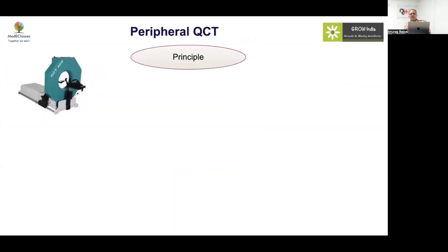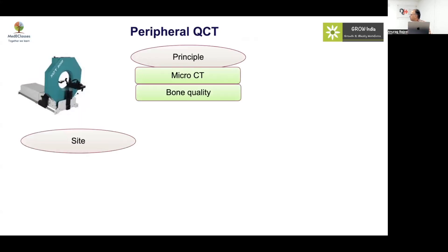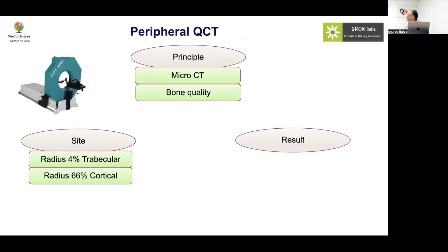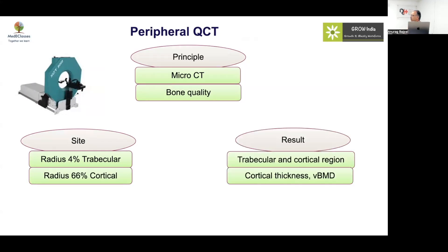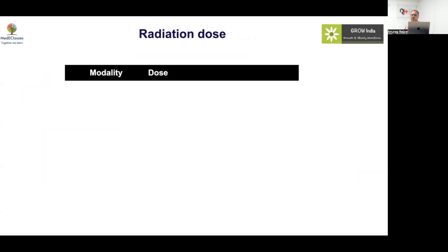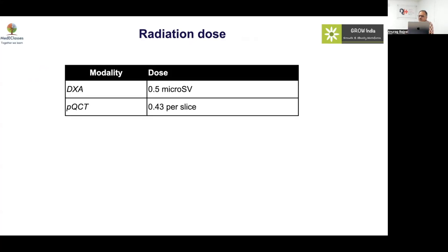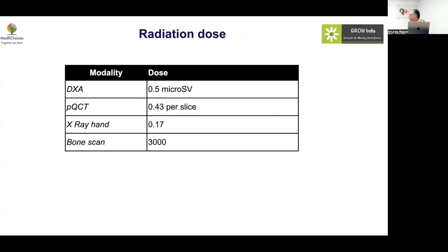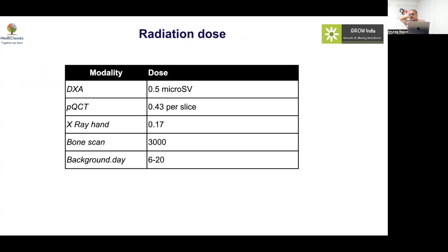Peripheral quantitative CT (pQCT) functions like a micro-CT and gives information about bone quality — trabecular bone at the 4% and 30% sites, and cortical bone at the 66% site on the radius. It provides volumetric density, stress-strain index, axial moment of inertia, and fracture risk indicators. Regarding radiation dose, DEXA is 0.5 μSv, pQCT is slightly more, but both are far lower than a hand X-ray, bone scan, or even background radiation.